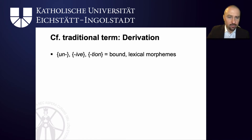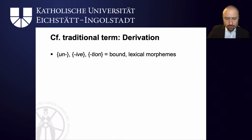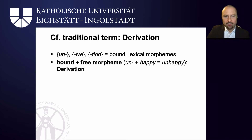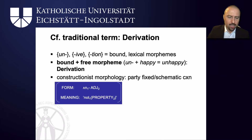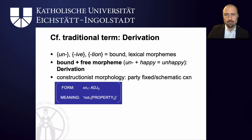There is also a schema for the property, which ends in -tive. Traditionally, cases such as these are known as derivation — you have morphemes like un-, -ive, and -tion that are bound because they always need to attach to a free morpheme, and lexical because they create new words. So whenever a bound and a free morpheme are combined, as in un- and happy, this is called derivation. From a constructionist morphology perspective, this is actually not just a small morpheme but a partly fixed and schematic construction, un-adjective, which carries the meaning 'not the property denoted by the adjective.'